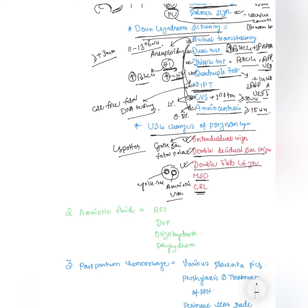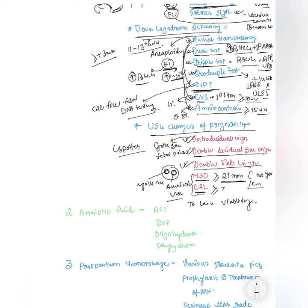For mean sac diameter: if it is more than 21 mm with no yolk sac or embryo, it is called a non-viable pregnancy. For crown-rump length: the criteria is 7 mm — if crown-rump length is more than or equal to 7 mm but no cardiac activity is present, it is also a non-viable pregnancy.